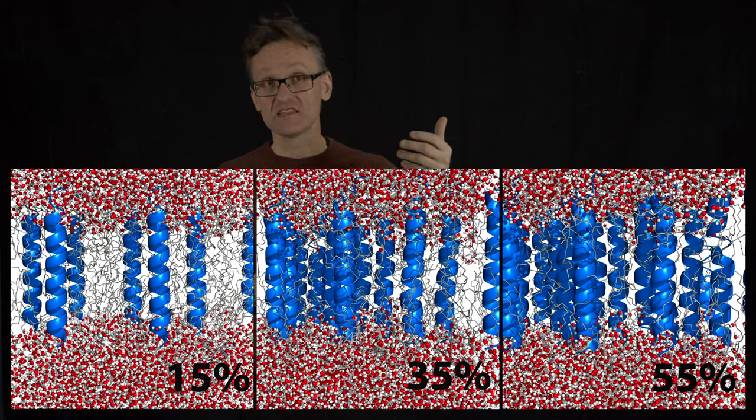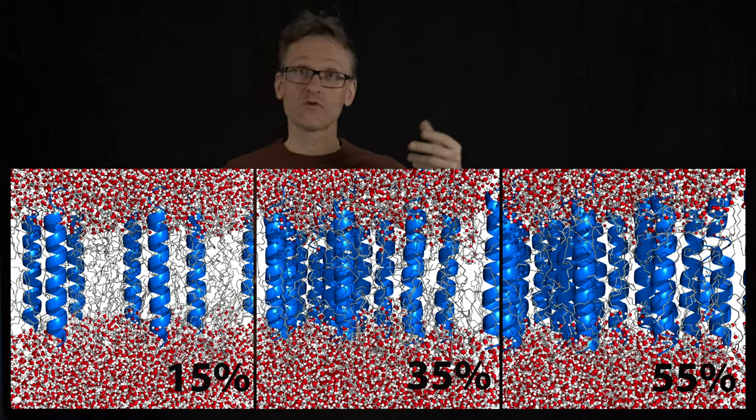previous helices in the membrane, either the ones that came before me in my sequence or simply other helices that are already there, can help stabilize a charged residue.